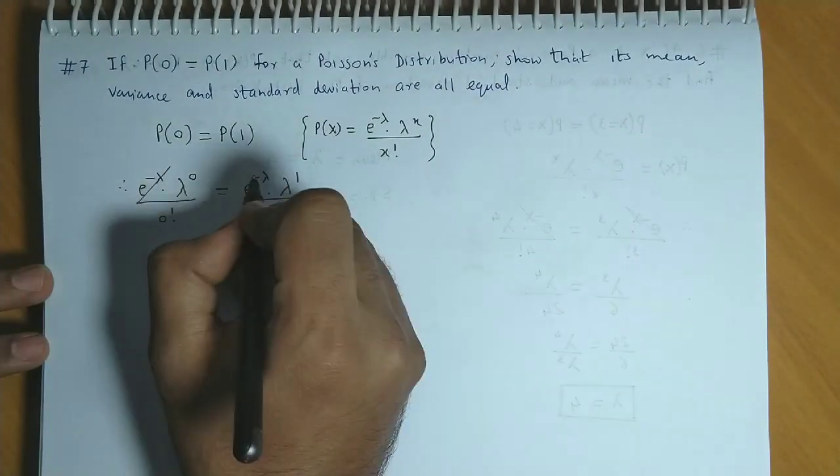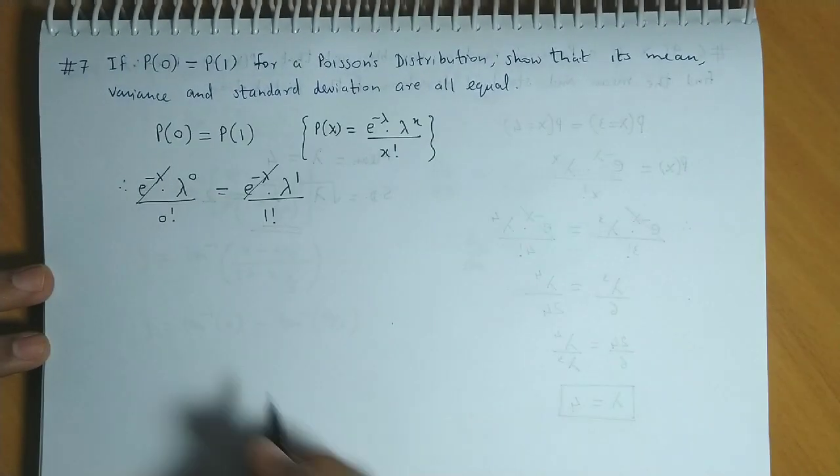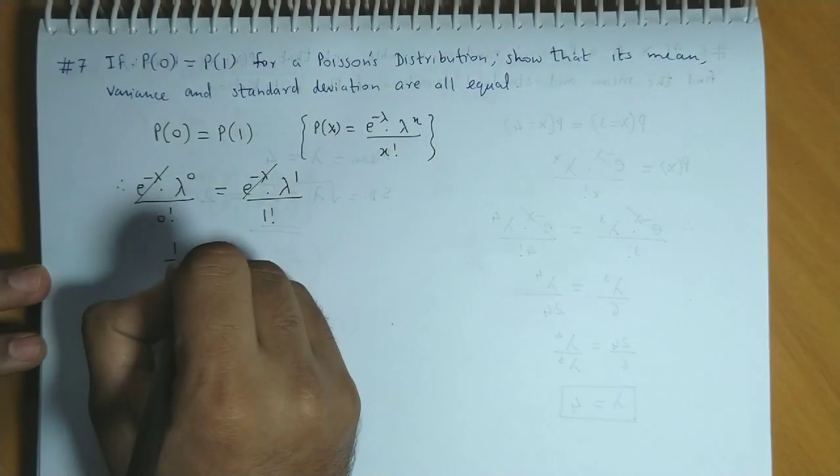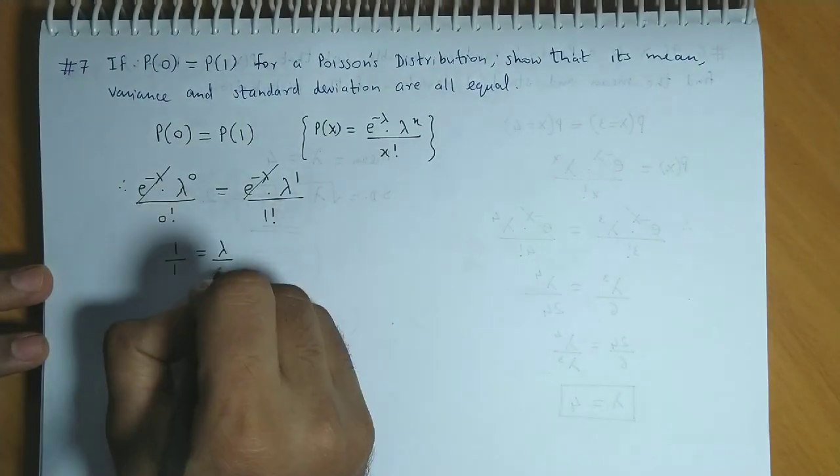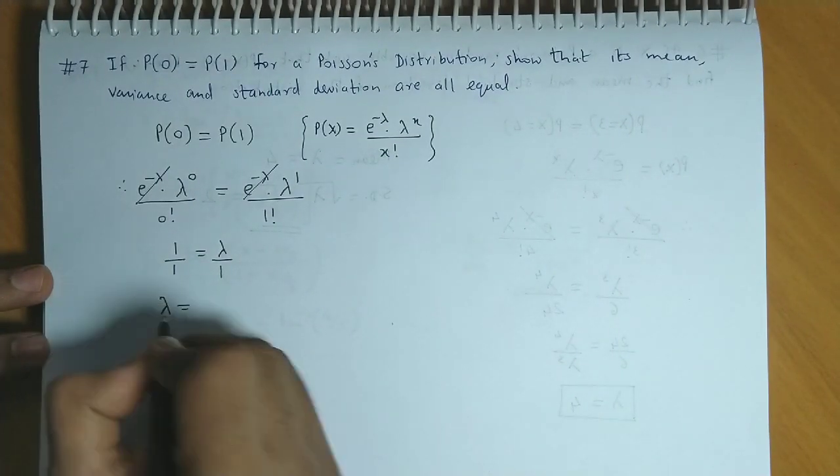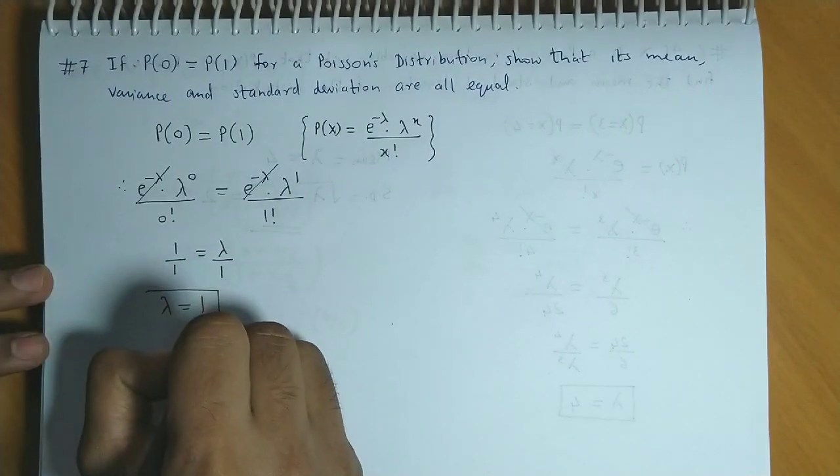On both sides, e raised to minus lambda cancel. Lambda raised to 0 is 1. 0 factorial is also 1. Here, lambda and 1 factorial is 1. So basically, we have the parameter value, that is lambda is equal to 1.